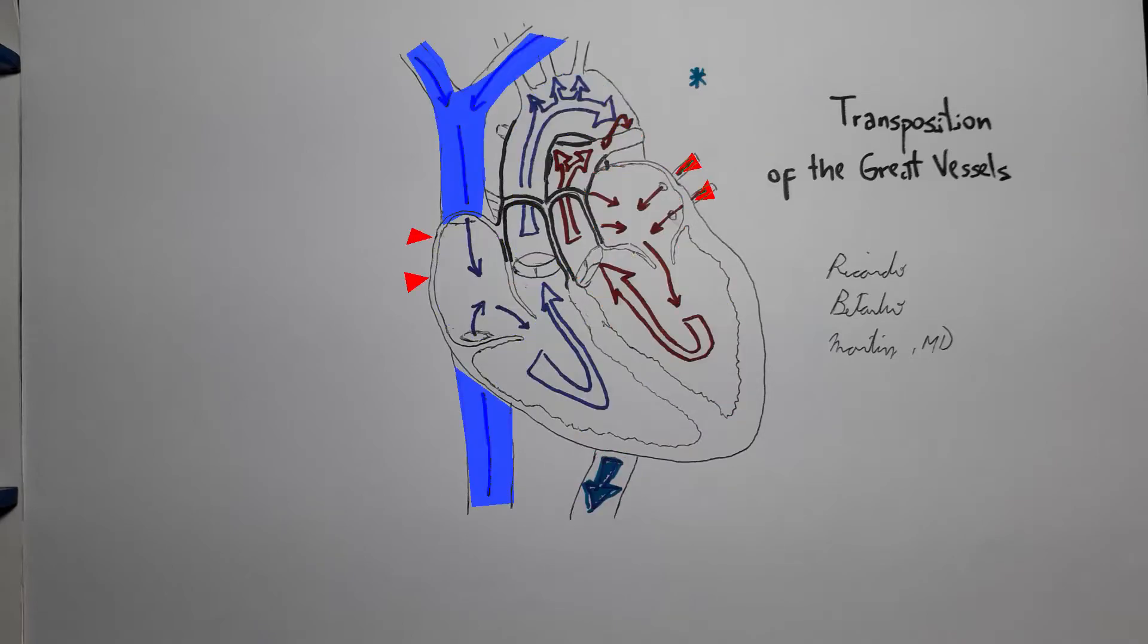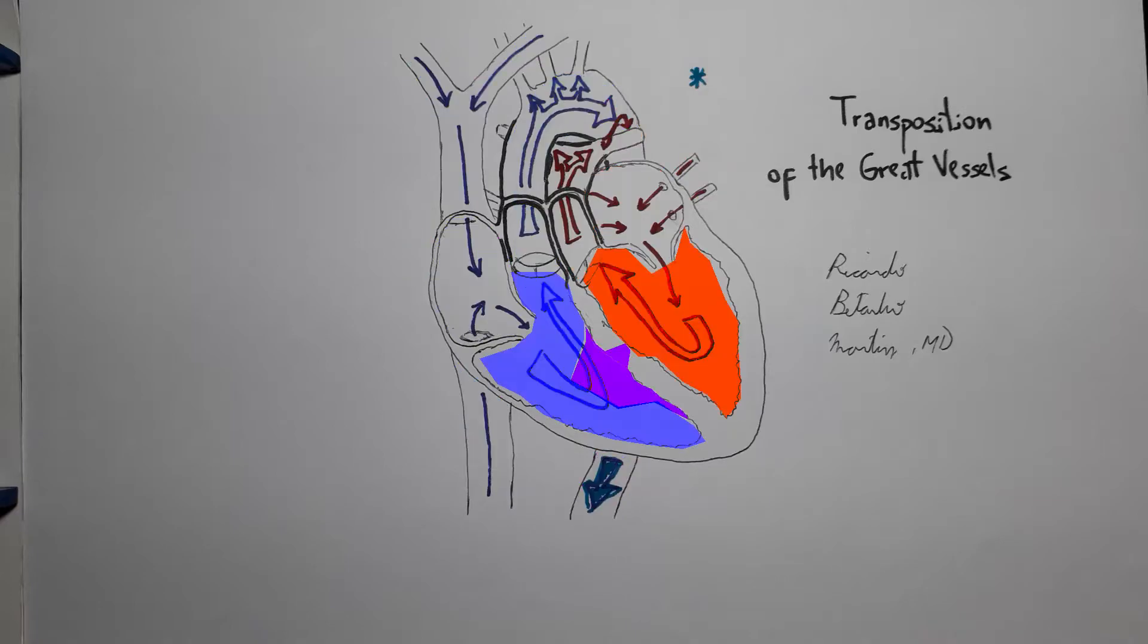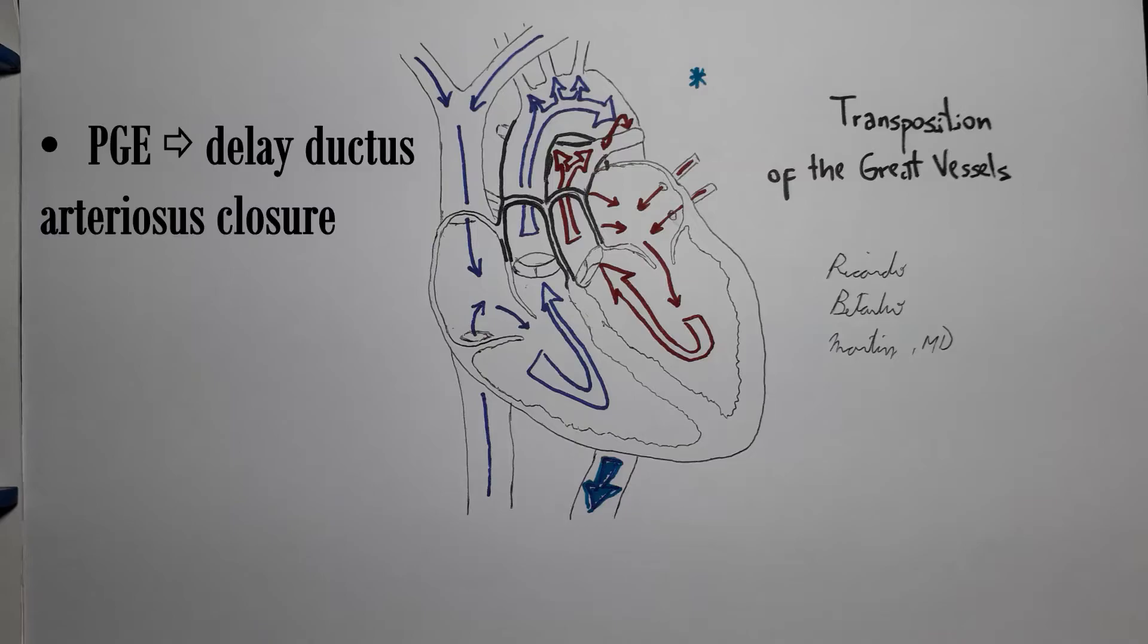It's better to have some oxygenated blood leaking from the right heart to the left heart through some defect in the wall than have no oxygenated blood at all reaching the systemic circulation. This is why we may actually administer prostaglandin E to delay the closure of the ductus arteriosus in the newborn as a way of maintaining some degree of communication between the pulmonary and systemic circulations.